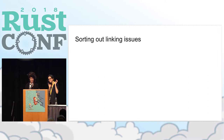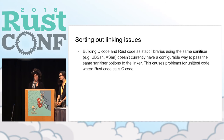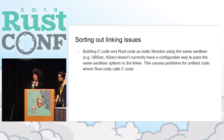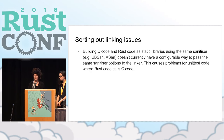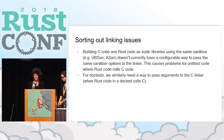Once we integrated a module rewritten in Rust, we ran into linking issues with tests. Building C code and Rust code as static libraries using the same sanitizer — for example, UBSan or ASan — doesn't currently have a configurable way to pass the same sanitizer options to the linker. This causes problems for unit test code where Rust code is calling C code. For doc tests, we need a similar way to pass arguments to the C linker when Rust code in a doc test is wrapping C. Originally I thought a multi-stage build process might help, but that still didn't fix the ASan issue.